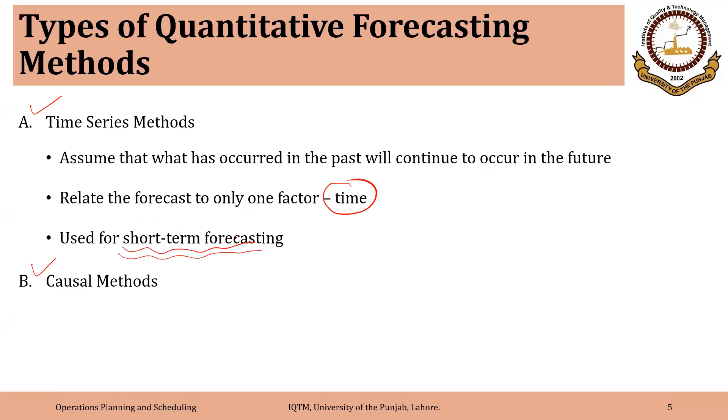So generally they are used to forecast for next one period. Causal methods associate future demand with some variable other than time. And we will discuss this technique toward the end of this discussion.